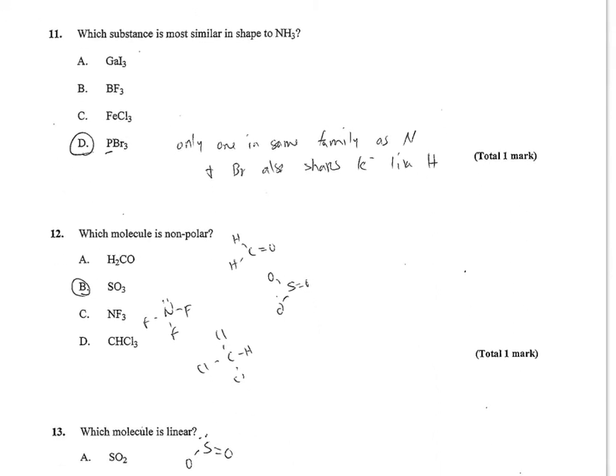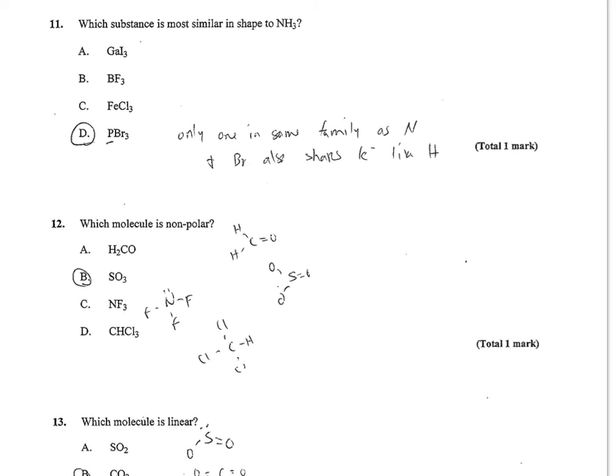Number 11 wants to know which substance is most similar in shape to NH3. The only one in the same family as nitrogen is phosphorus. And so iodine, fluorine, chlorine, they're all halogens. So the ratio should only be the same between phosphorus and nitrogen, should have the same ratio with the halogen or hydrogen.